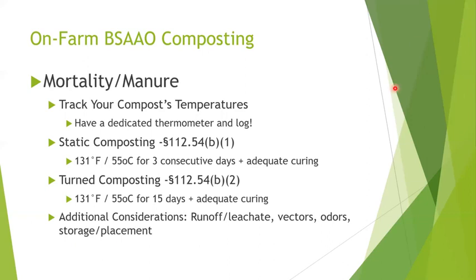Now getting into details about on-farm composting of biological soil amendments of animal origin. The two primary sources farmers are going to encounter are mortality and manure. Although they're different, both are still regulated the same under Subpart F, so the treatment for creating a treated compost follows the same rules for both of these sources.